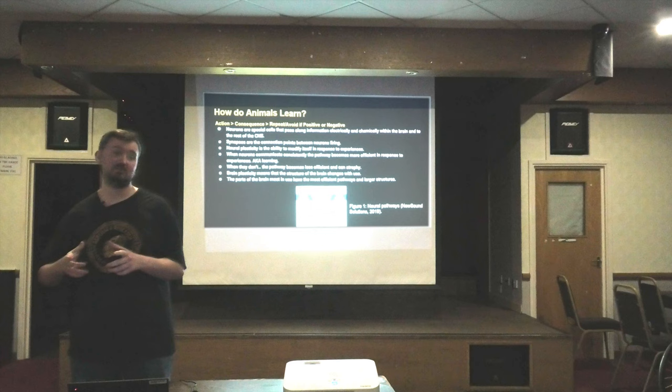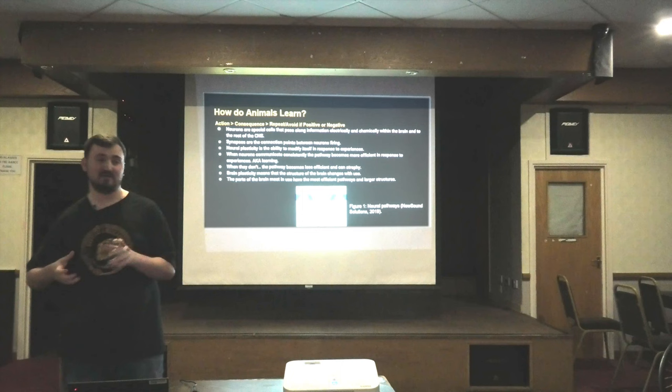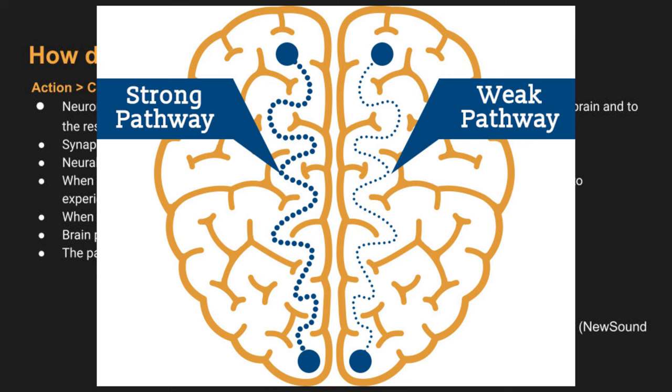When we don't use those pathways, the reverse happens and our neural pathways can atrophy. The brain structure can change in response to stimulus or lack of stimulus — it can go either way. You can see in this picture a strong pathway, the more-travelled path, and then a weak pathway — the less travelled, less efficient, slightly atrophied one.